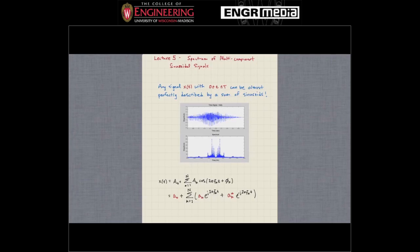The reason why this is important is that in reality, we can actually represent any signal x(t). Say that signal x(t) starts at time zero and is done at some time capital T. That signal can be represented almost perfectly by a sum of sinusoids. We'll see later on in the course what we mean by 'almost perfectly.'